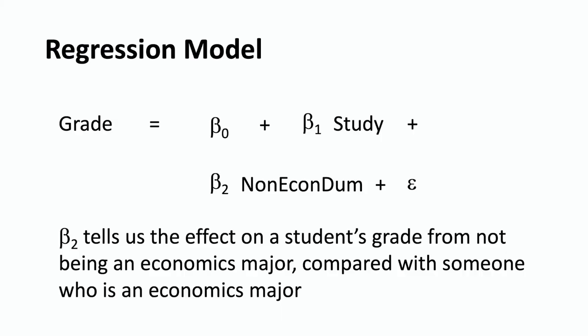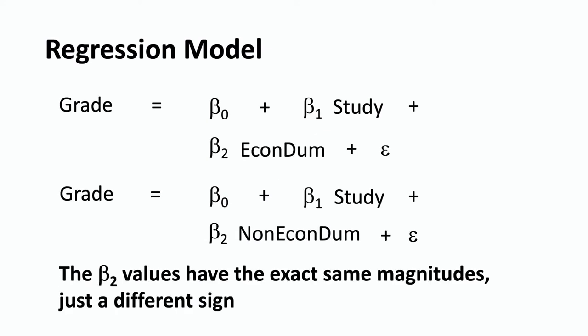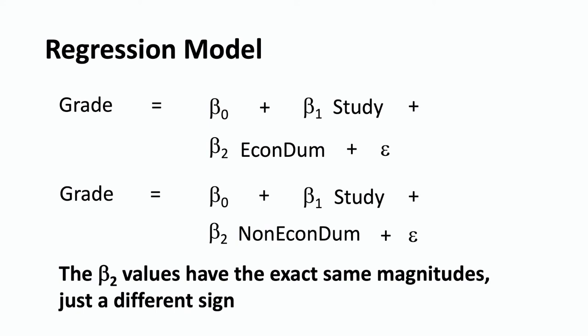Of course, if we wanted to, we could put the Non-EconDum dummy variable into the regression model instead. That model would be: grade = beta naught + beta 1 study + beta 2 Non-EconDum. In this version, beta 2 tells us the effect on a student's grade from not being an economics major, compared with somebody who is — which is the excluded category — also controlling for the amount of time that the student spent studying. So those are the two ways you could incorporate whether or not a student is an economics major into the regression model.